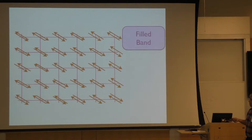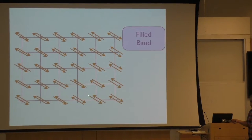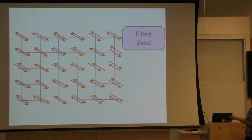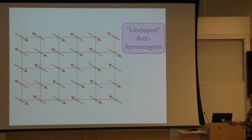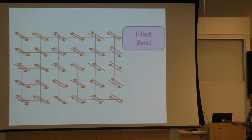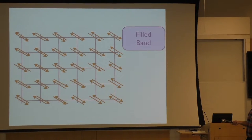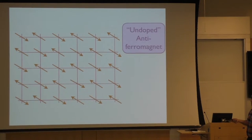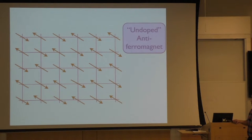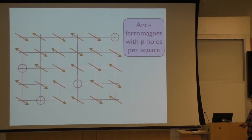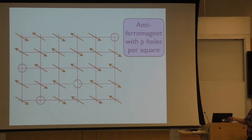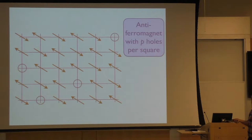I put in this fill band. There are two reference states: there's the antiferromagnet and there's the fill band. Now if I put in the antiferromagnet, these holes here — the density of this is what I've been calling P.